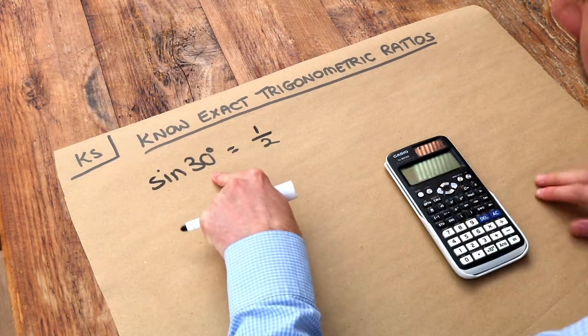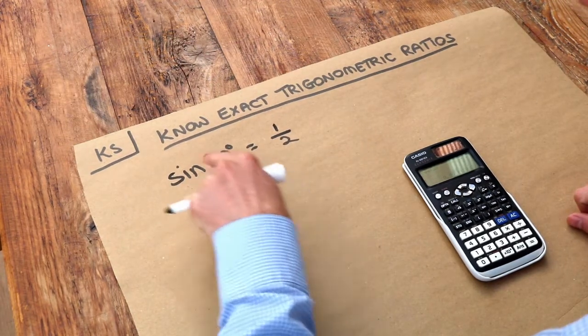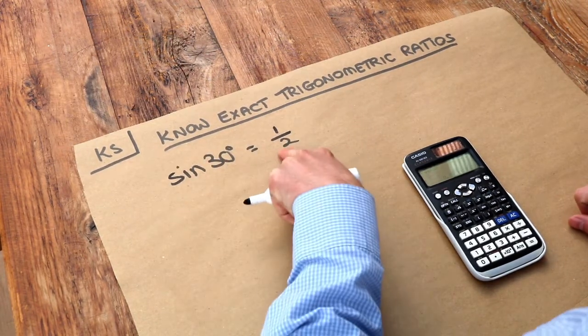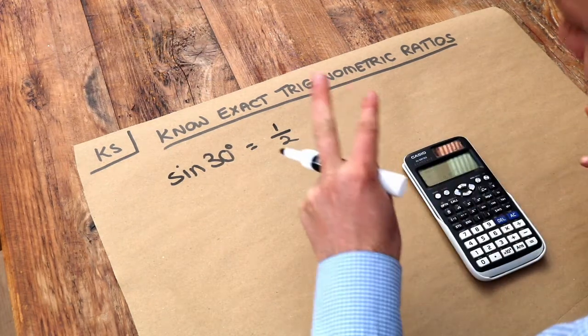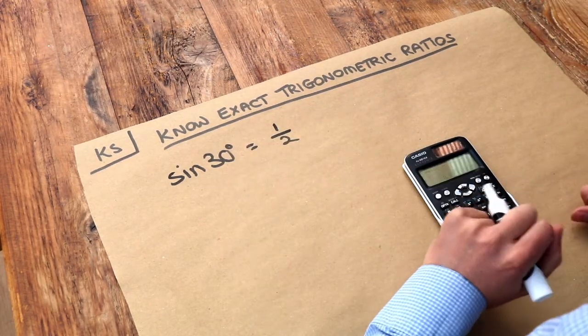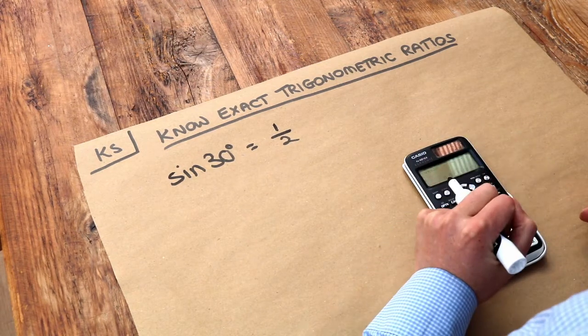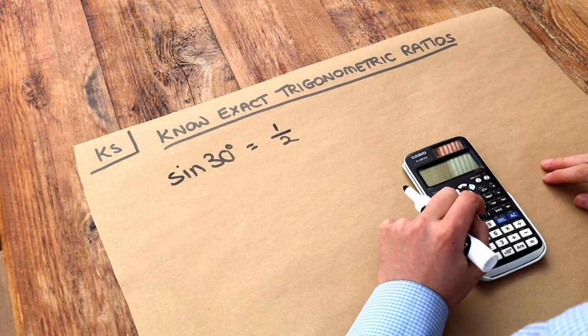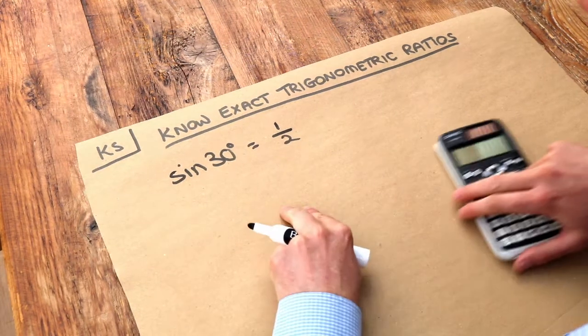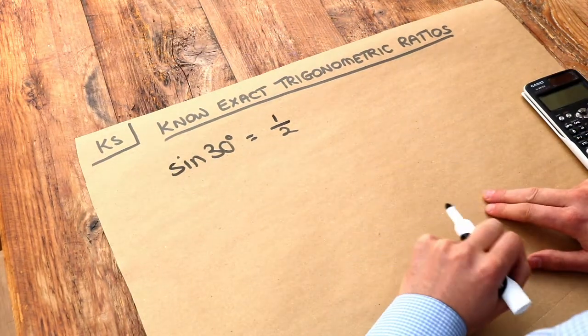So there seems to be certain angles that when you do sine, cos, or tan of it, you get something nice. Your calculator gives you some nice exact result, might have a square root in it, but it's not some long decimal that you can't represent exactly. And these are known as exact trigonometric ratios.